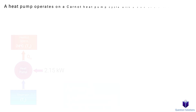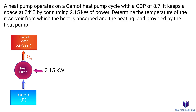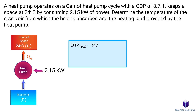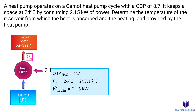Let's take a look at this problem, where we have a heat pump operating on a Carnot cycle. We need to figure out the temperature of the reservoir from which heat is absorbed, and the heating load provided by this heat pump. The COP of the heat pump is 8.7. It keeps the space heated at 24 degrees Celsius, so that's TH. And it consumes 2.15 kW of power, which is our power input. Our goal is to find TL and QH.